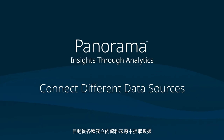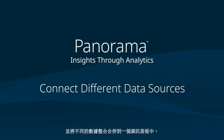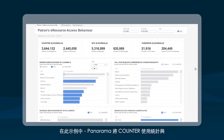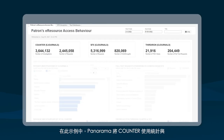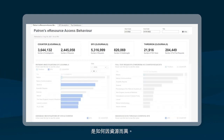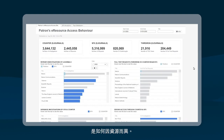Automate the pull of data from siloed sources and merge different data sets into one dashboard. In this example, Panorama connects counter reports with data from OpenURL resolver systems. This demonstrates how these different ways of measuring access to online resources can differ by resource.